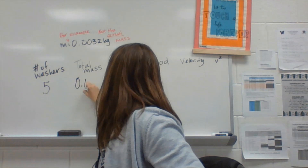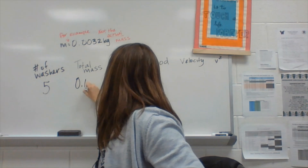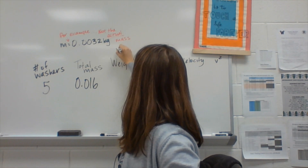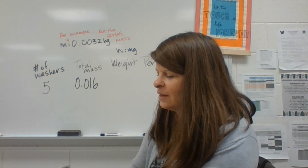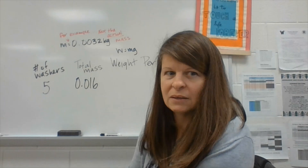So I get 0.016 — I just multiplied those two numbers to get the total mass. For weight, W equals MG. If I have total mass and I want to get total weight, I'm going to take that and multiply by G, which is 9.8. So I get 0.1568. Those three values are related.